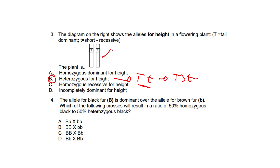Here's why the other options won't work. Option A won't work because homozygous dominant would require two dominant alleles, something like TT, which the diagram doesn't show. C is also incorrect because homozygous recessive would require two recessive alleles, small tt. And D — incompletely dominant for height — is completely incorrect because there's no mention of incomplete dominance in this scenario. This trait follows complete dominance.